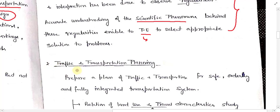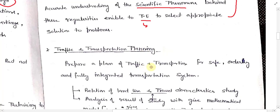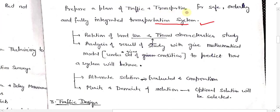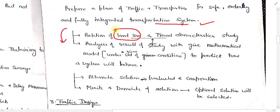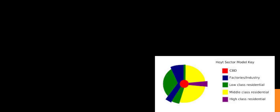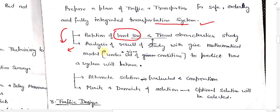The second work is traffic and transportation planning. This is done by a traffic engineer — a plan of traffic and transportation for a safe, orderly, and fully integrated system. This can be achieved by four main points. The first is to understand land use characteristics — how land behaves with respect to traffic generation.